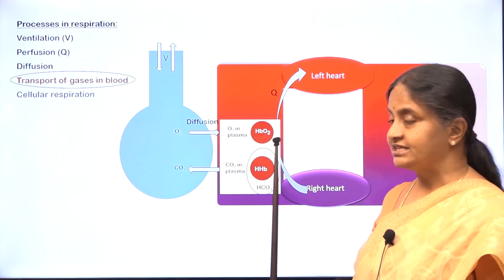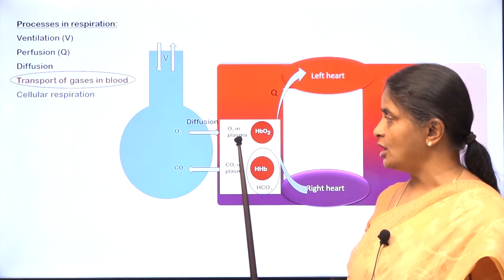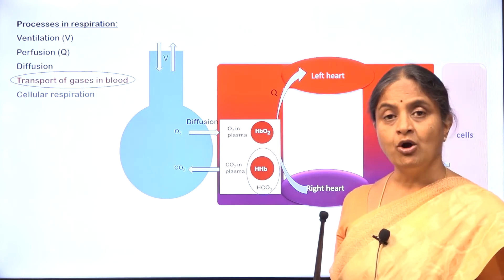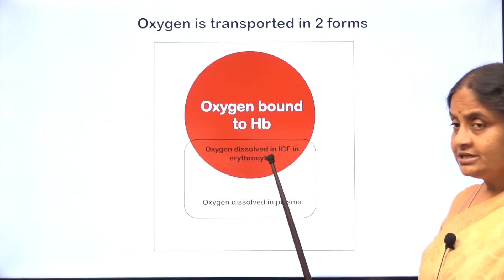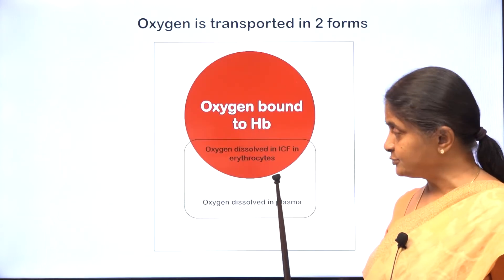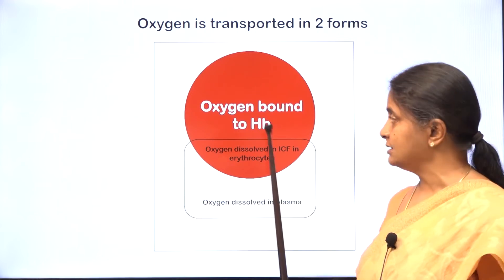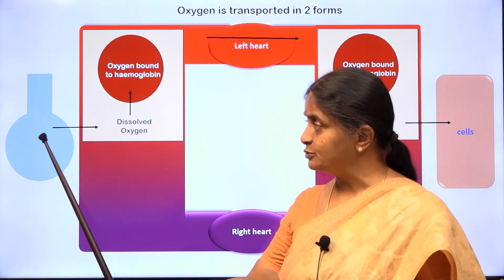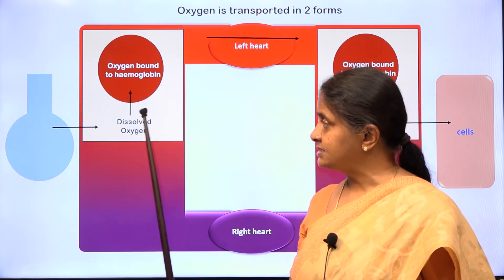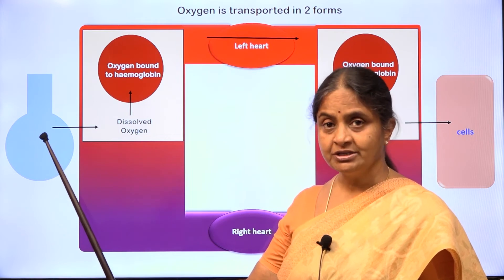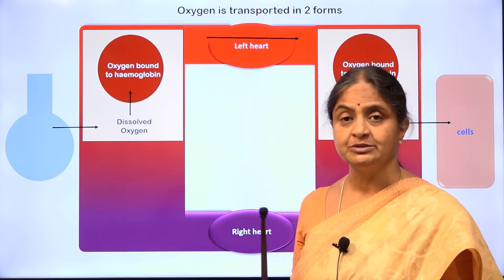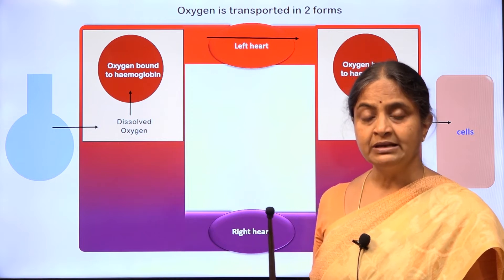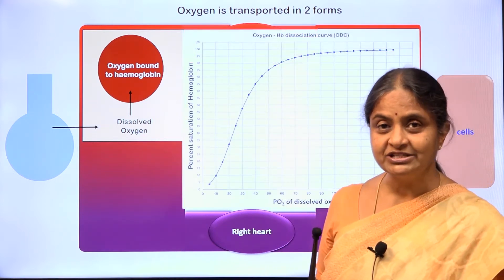Oxygen travels in two major forms in blood. One that is dissolved in plasma as well as erythrocyte intracellular fluid, and the other major form is oxygen that is loosely bound to hemoglobin. Dissolved oxygen exists within plasma as well as erythrocytes. We will refer to this collectively as dissolved oxygen. Dissolved oxygen can be thought of as forming the interface between alveolar oxygen and oxygen bound to hemoglobin.